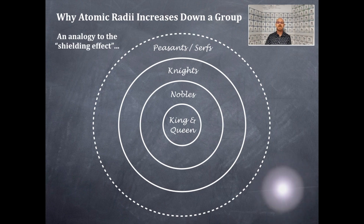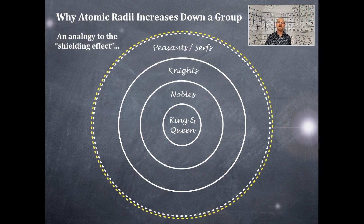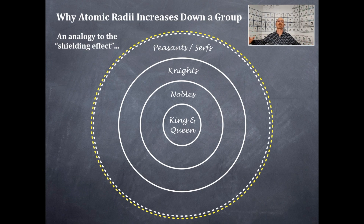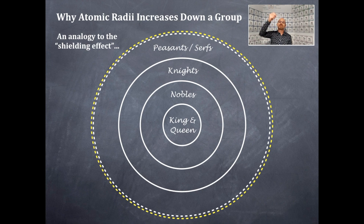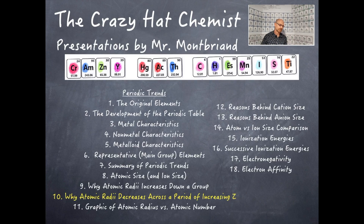And that's why the shielding effect means that the peasants and serfs — that is the outermost electrons — get larger. They get farther from the king and the queen, or the protons in the nucleus. Therefore, as you go down a group, the atomic radii increases.